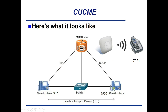When the 9971 calls the 7970 and it picks up, the two phones establish a Real-Time Transport Protocol (RTP) connection. Once that connection is made, the CME router no longer needs to be involved during the actual conversation. The 7921 wireless phone is also going to be running the SCCP protocol.